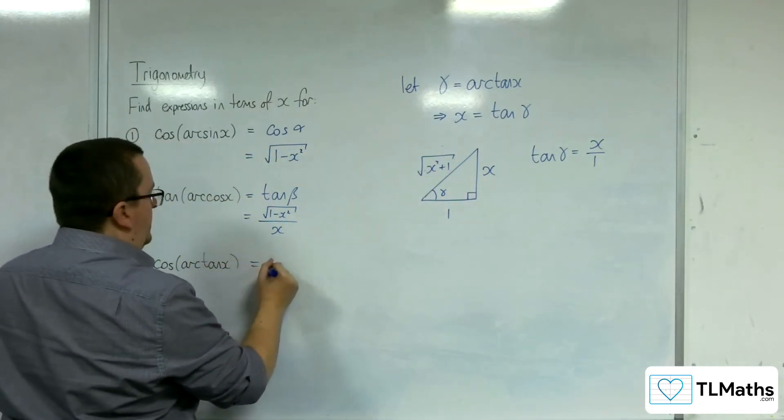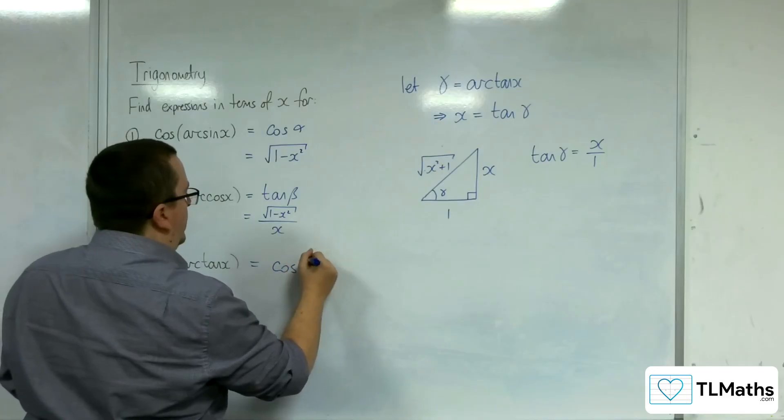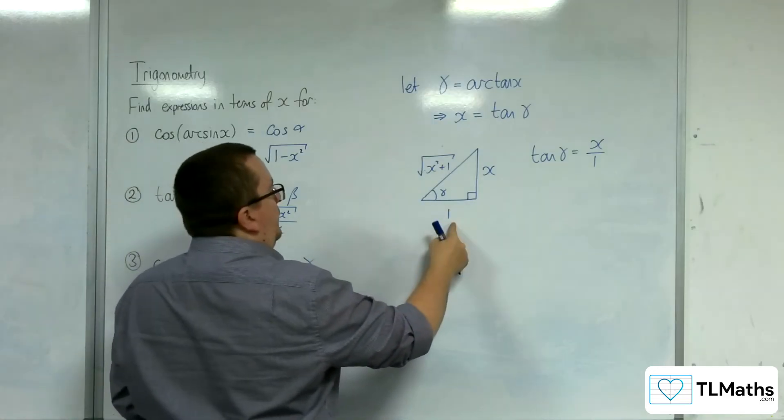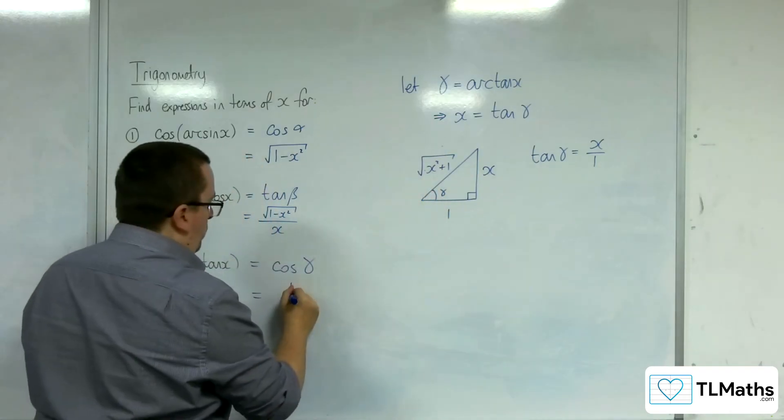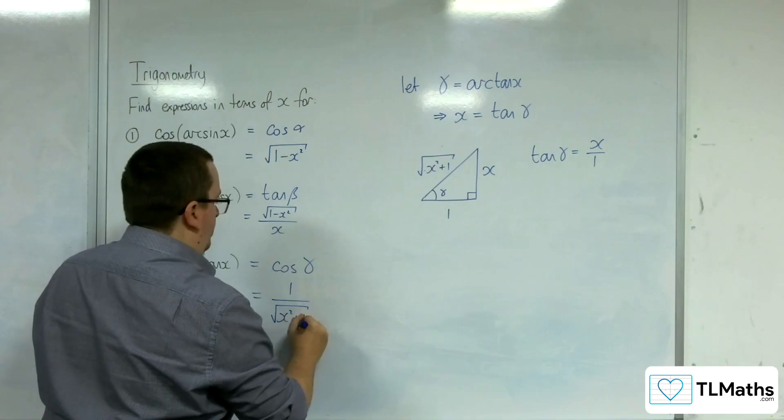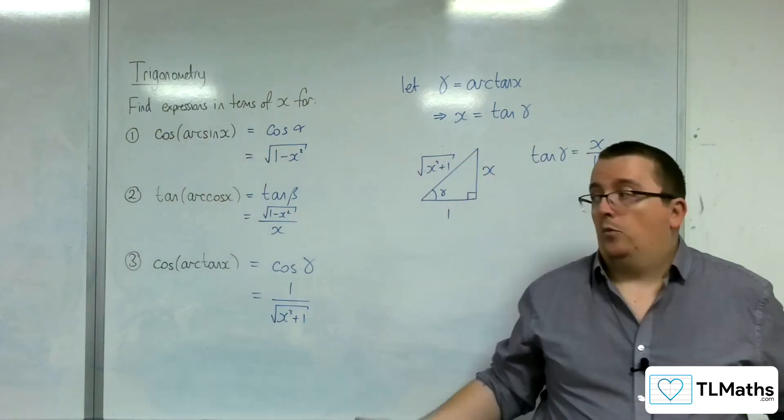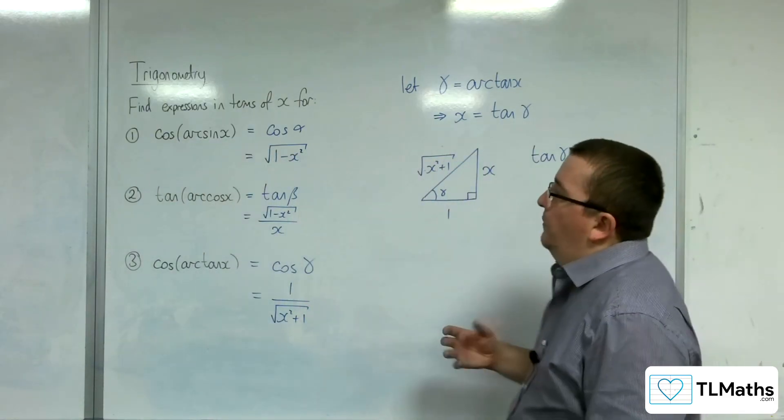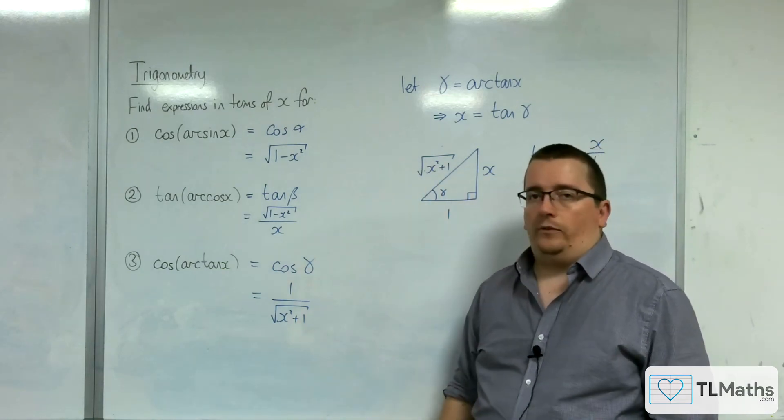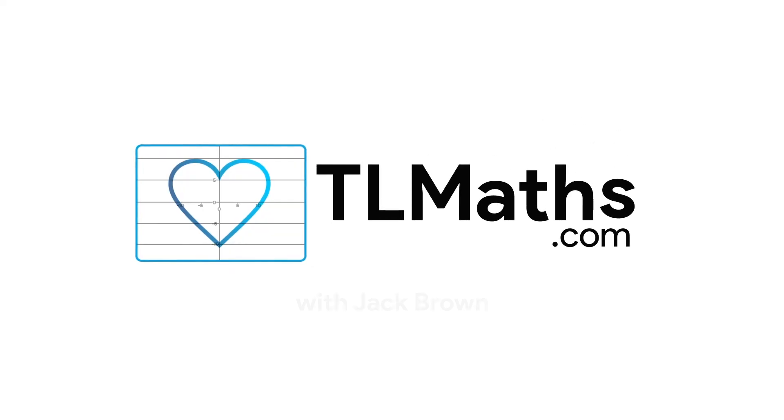So cosine of arc tan is cosine of gamma. Cosine is adjacent over hypotenuse. So that's 1 over the square root of x squared plus 1. And so that is how we can find equivalent expressions in terms of x for each of these. Thank you.